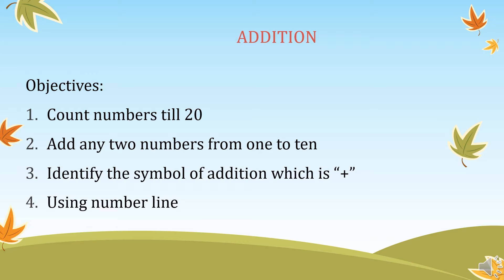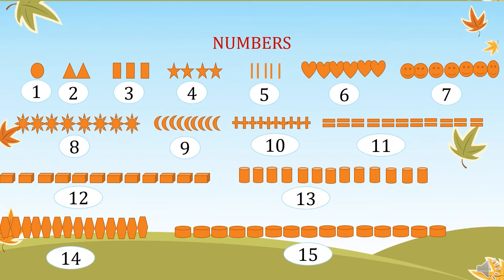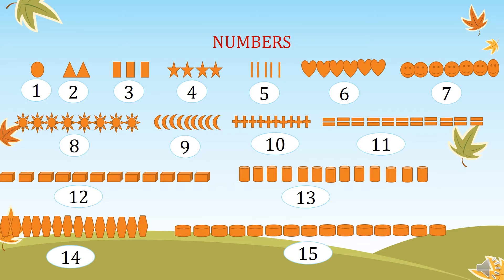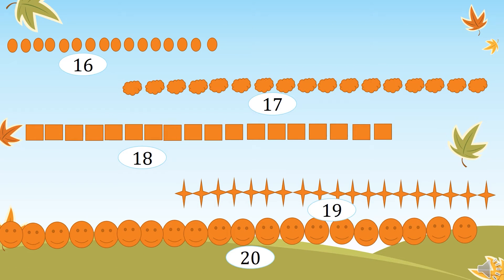Using the number line, we have the following numbers from 1 to 20. Count: 1, 2, 3, 4, 5, 6, 7, 8, 9, 10, 11, 12, 13, 14, 15, 16, 17, 18, 19, 20.